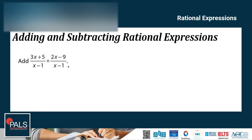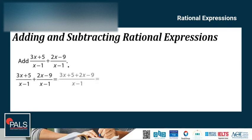Let's try the first example. Add 3x plus 5 over x minus 1, plus 2x minus 9 over x minus 1. The denominators are the same, so we simply add the numerators and copy the denominator. We have 3x plus 5 plus 2x minus 9, over x minus 1. Simplifying by combining like terms, we have 5x minus 4 over x minus 1.